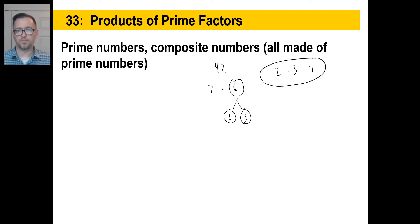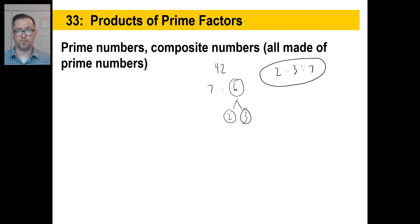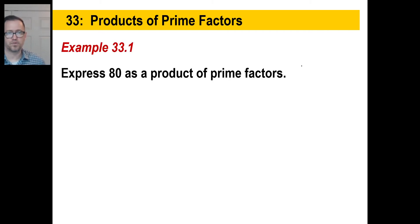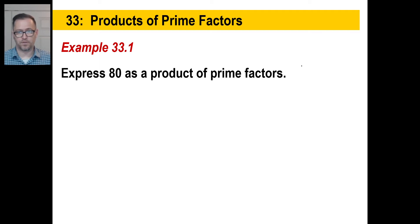All composite numbers are made up of prime numbers. If you keep breaking them down and breaking them down, you will eventually get a string of prime numbers like two and three and five and seven and 11 and so on. Let's express 80 as a product of prime factors using something called the factor tree.